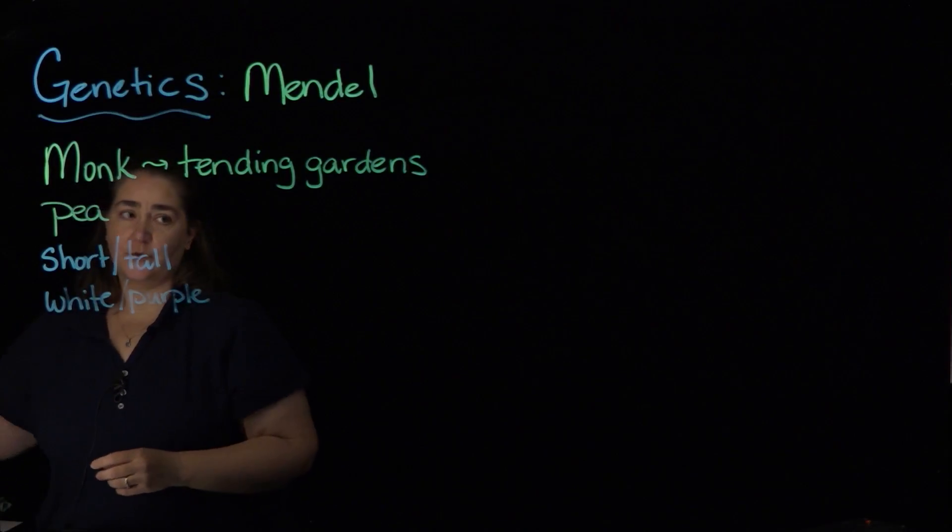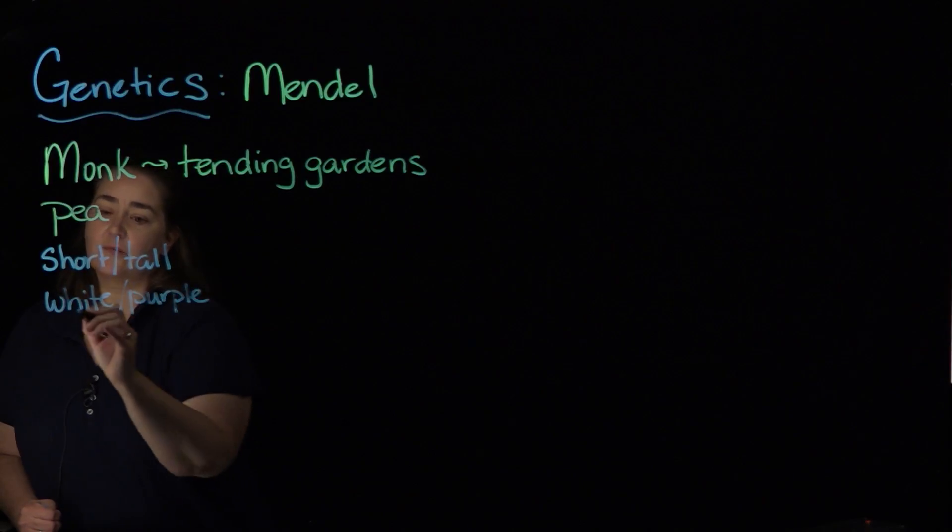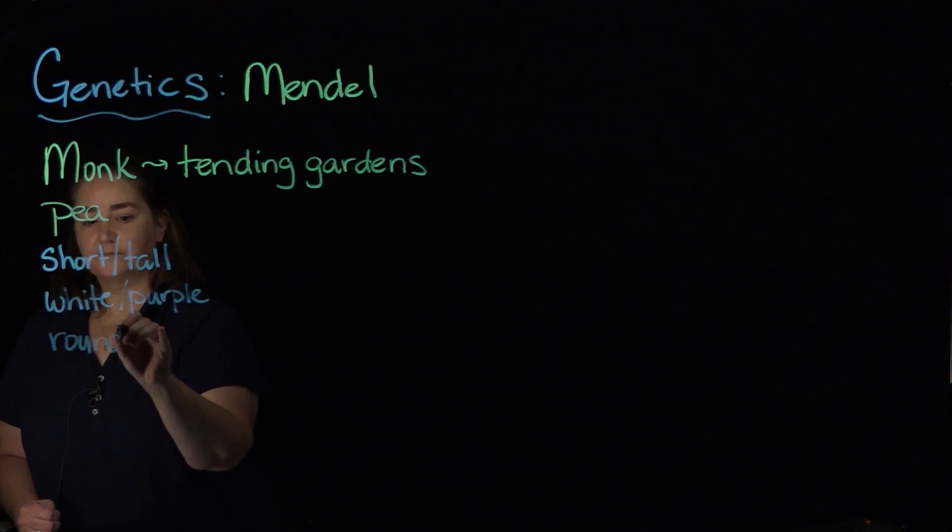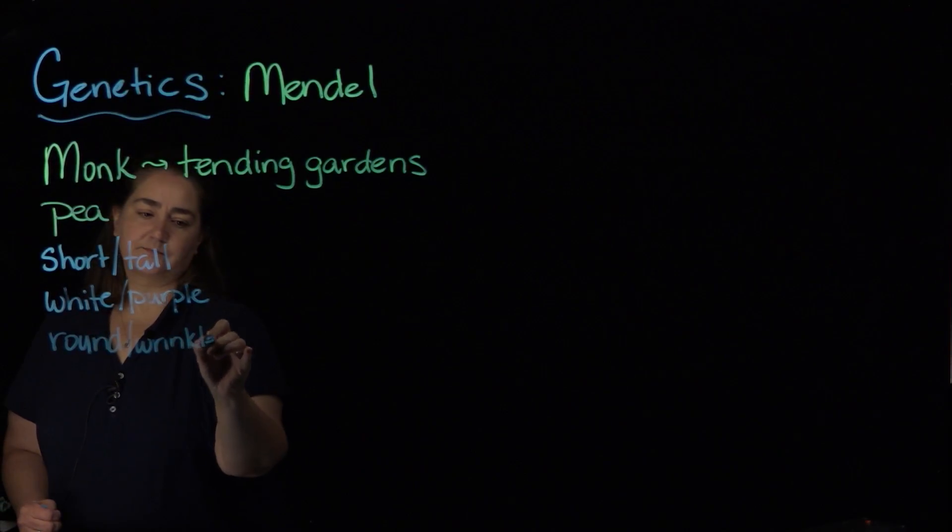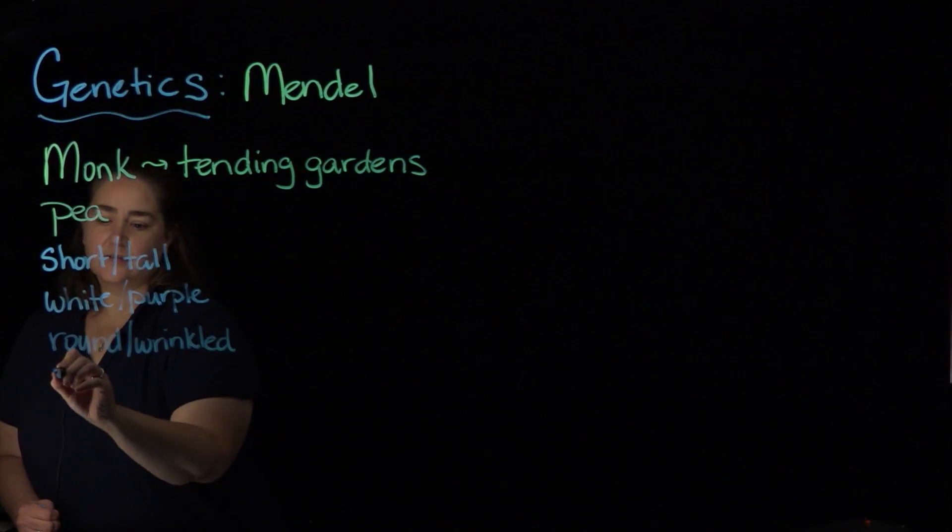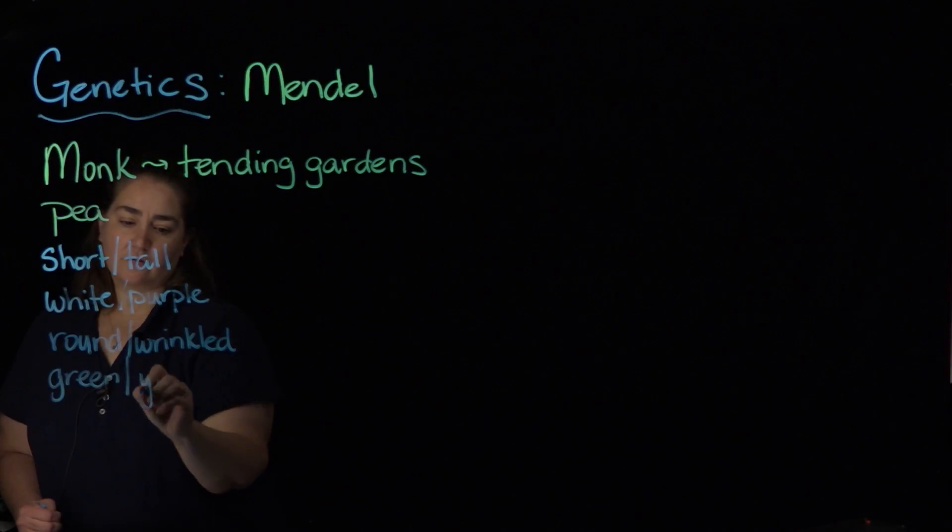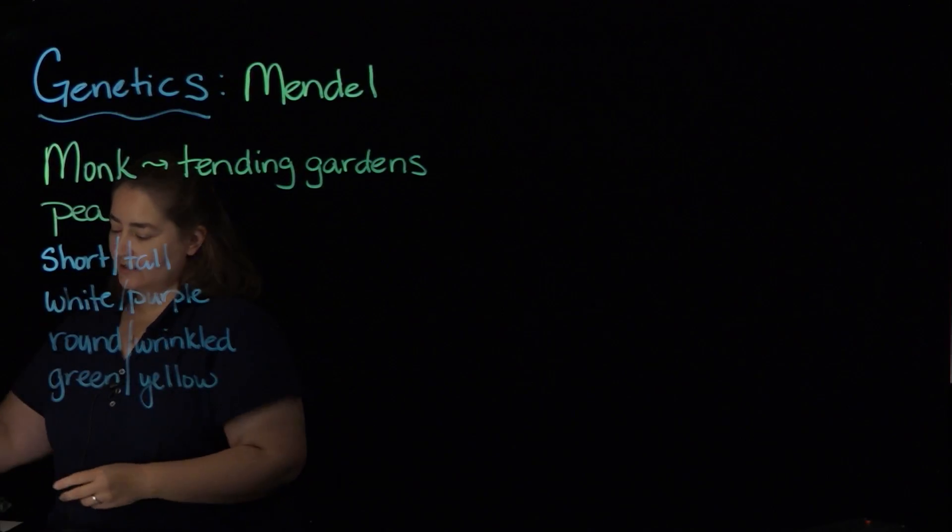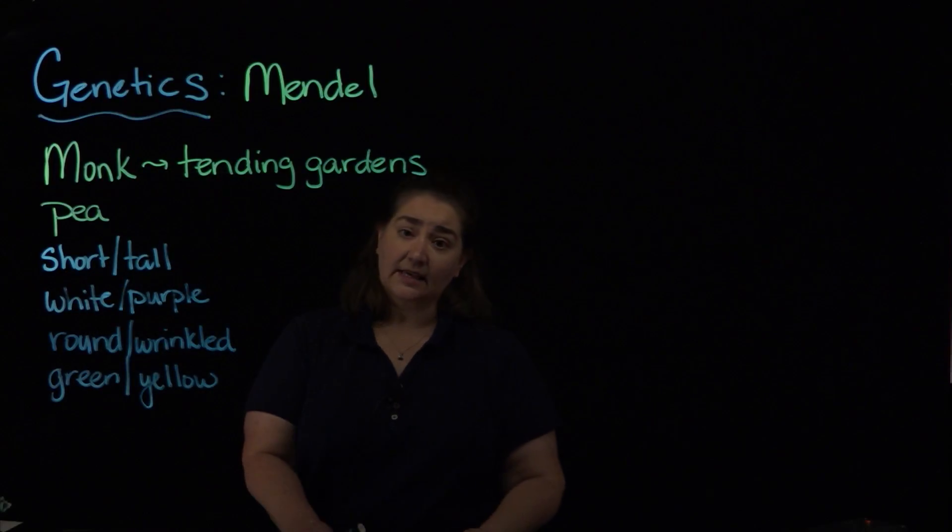Some had round seeds, some had wrinkled seeds, some of the peas were green, some of the peas were yellow. And that really fascinated him in terms of how those differences came about.